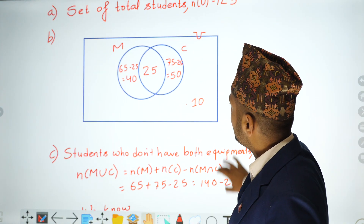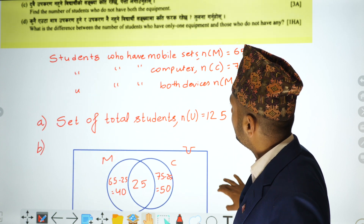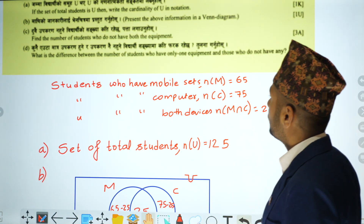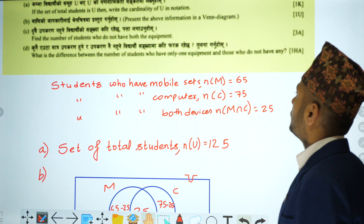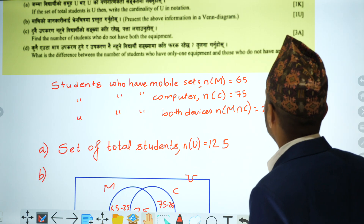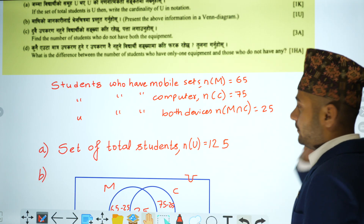The last question: what is the difference between the number of students who have only one equipment and those who don't have any?